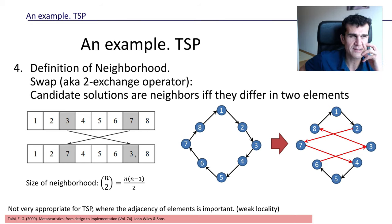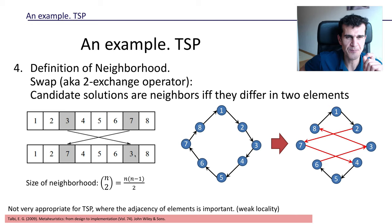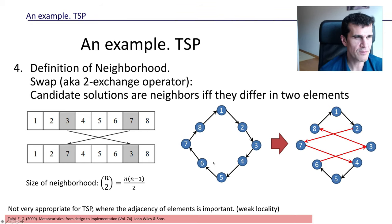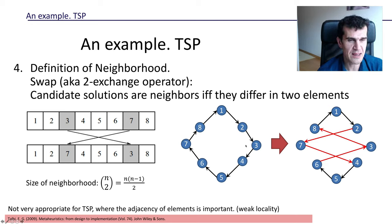The swap operator is simple to implement and in principle seems okay, but for the traveling salesman problem it has an issue: this definition of neighborhood does not have strong locality. That means neighbors defined this way will not have similar quality, which is bad for local search — if neighbors don't have similar quality, local search won't perform meaningful searching in the landscape. We can see this with an example where two swap-neighbors differ greatly in tour length.